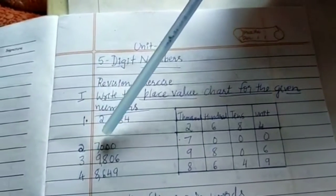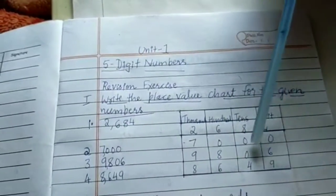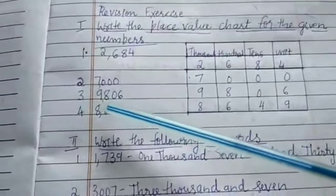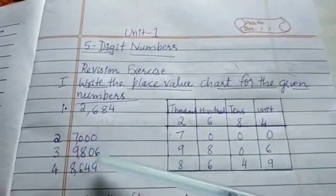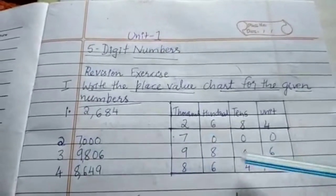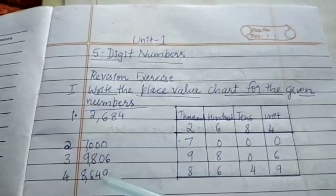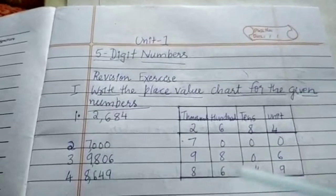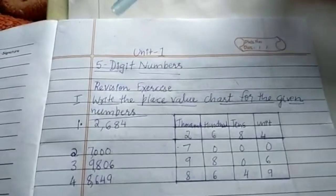The second number is 7000. So 7 comes under 1000 place, 0 in the 100 place, 0 in the 10s place and 0 in the Units place. Third one: 9806. Here 9 comes under 1000 place, 8 comes under 100 place, 0 comes under 10s place and 6 comes under Units place. In this way we can write the place value chart for the given numbers.